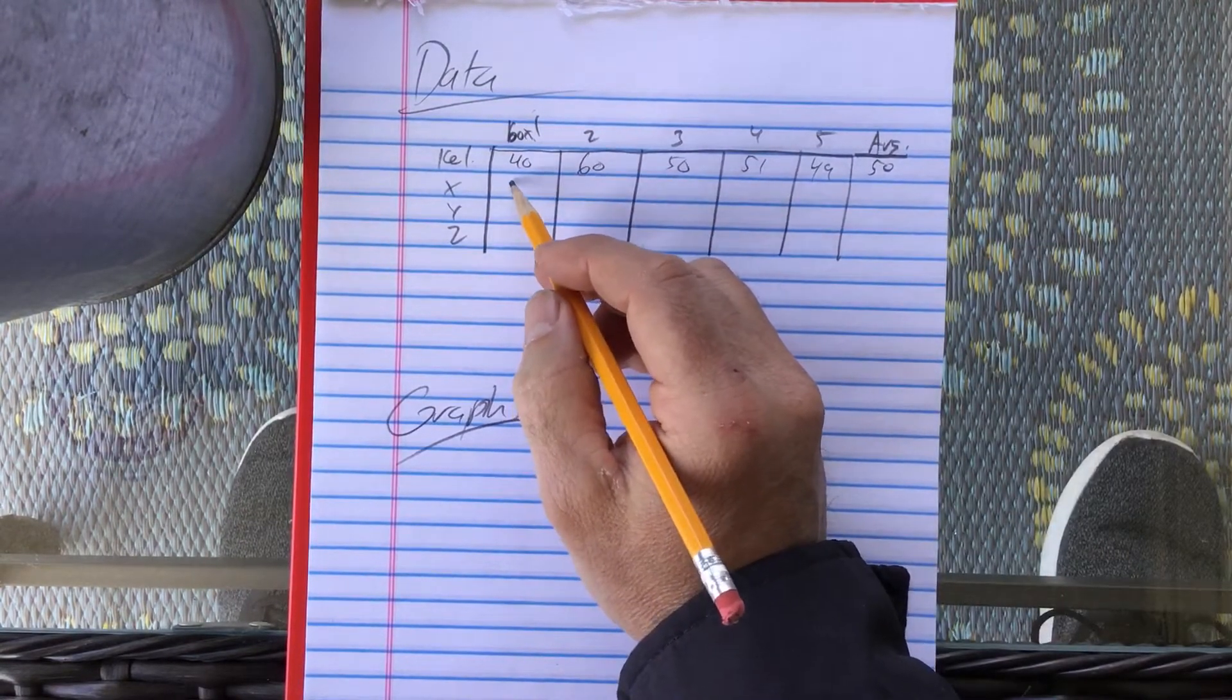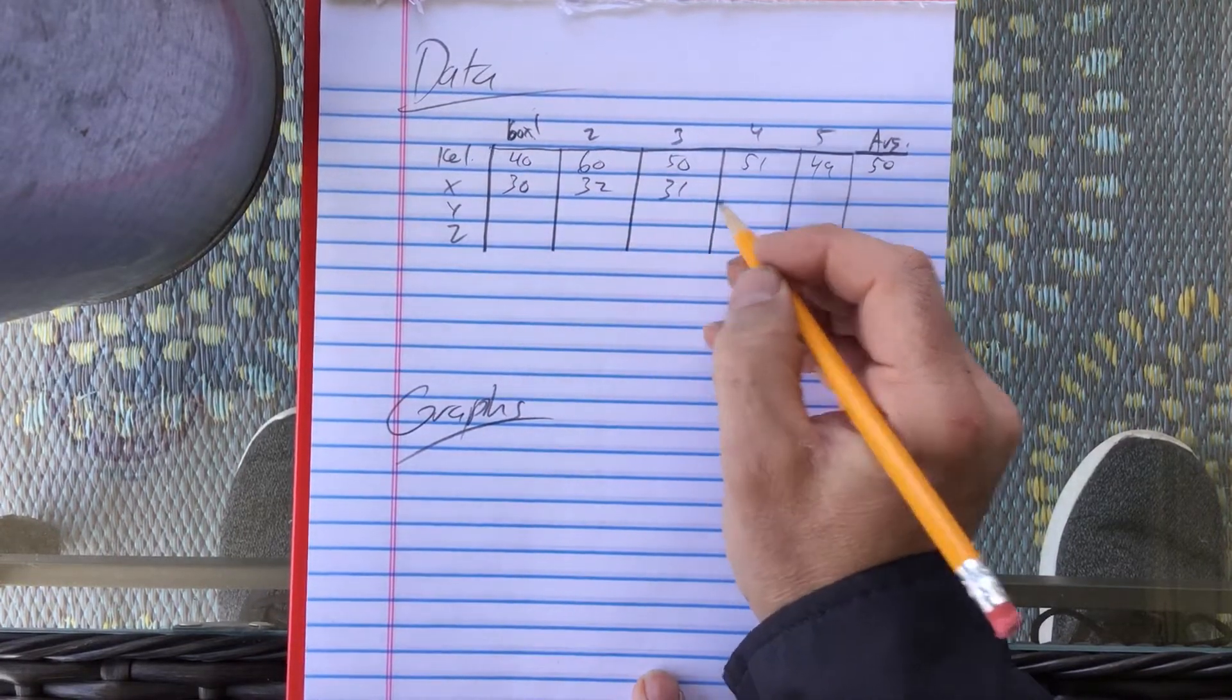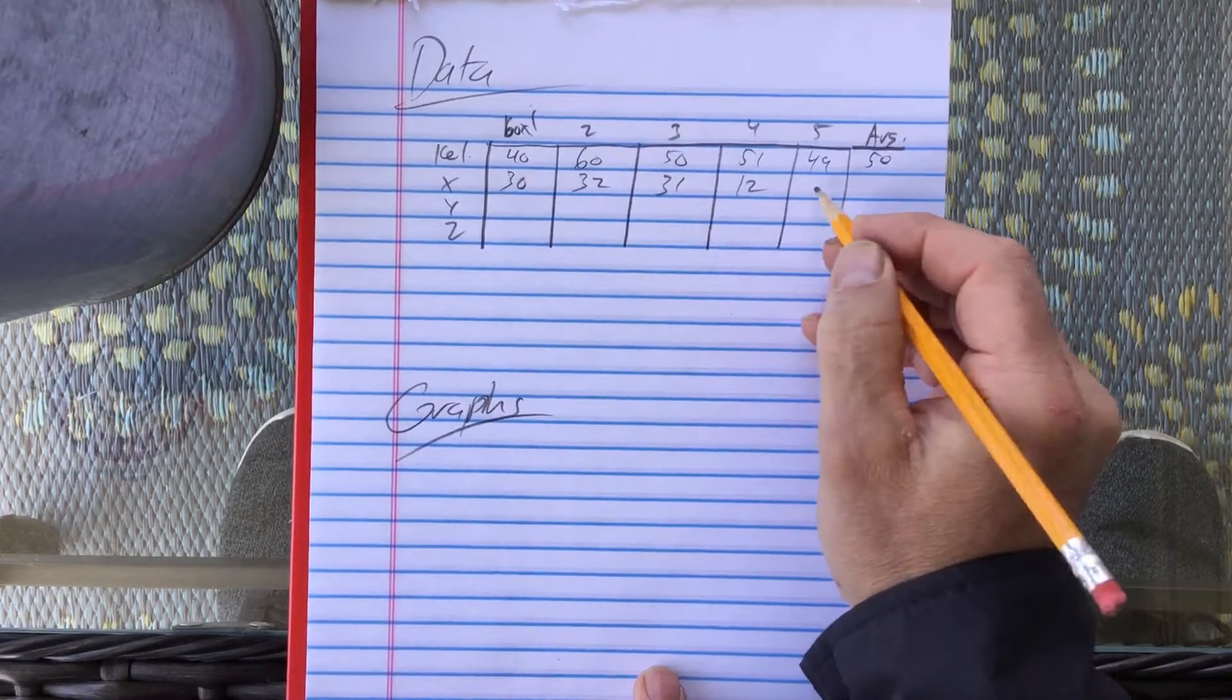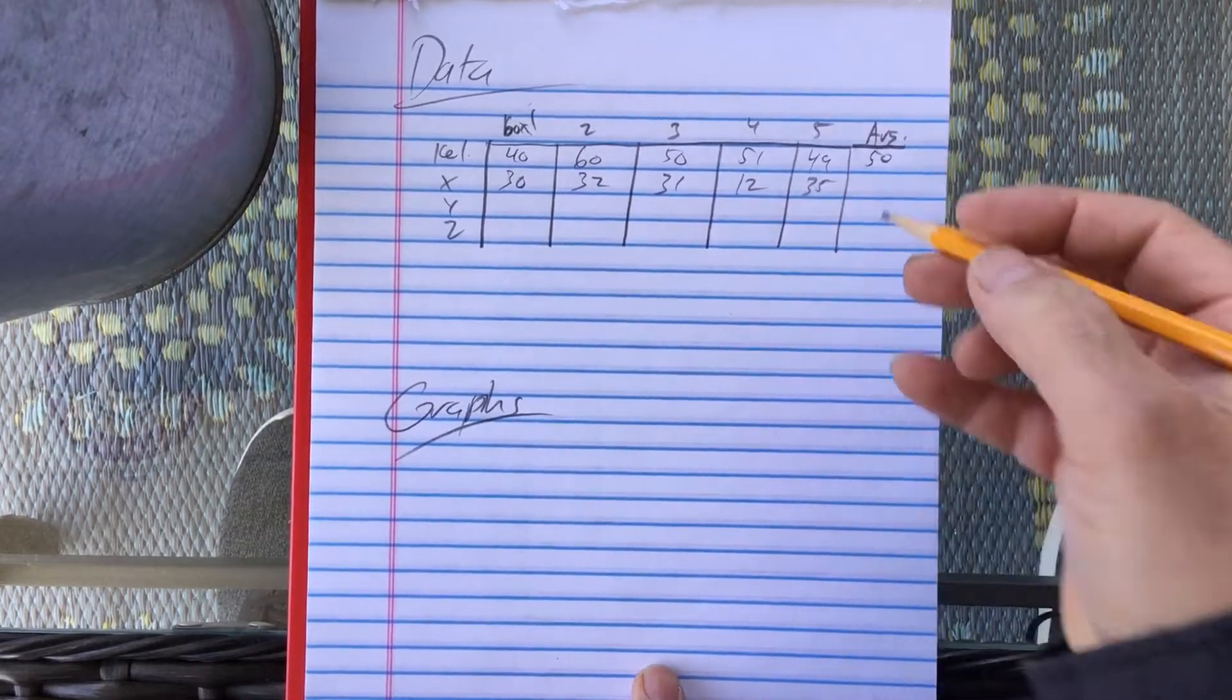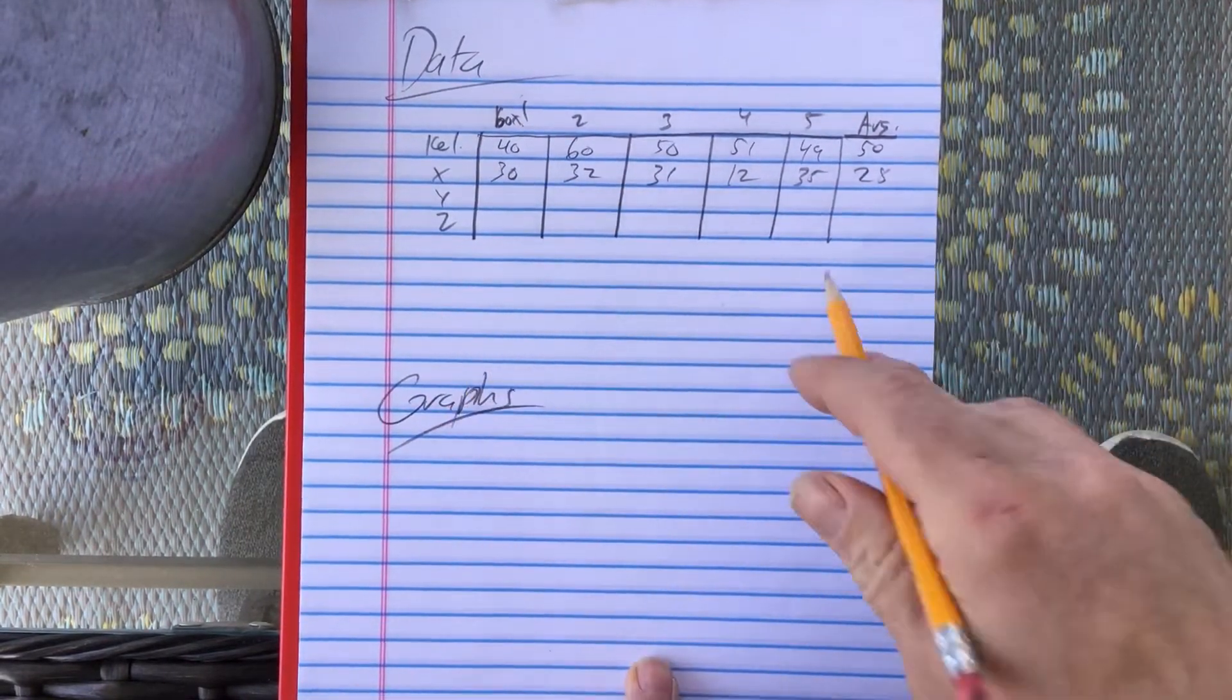For X, I had 30, and 32, and 31, and 12, and then 35 for an average, I don't know. We'll just guess, 28, and so on and so forth.